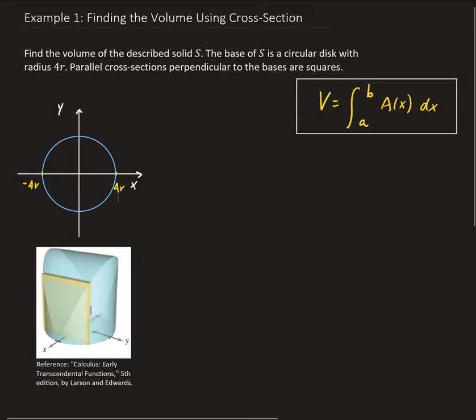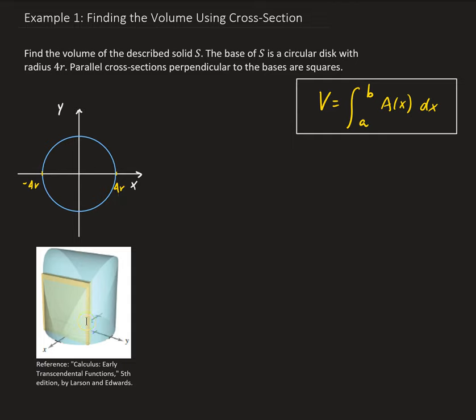What we need to do to find the volume of the structure is find the area of the cross section. In this case, the cross section is a square. Then we're going to integrate that within our bounds, and that will give us the volume. I'm going to draw in the cross section — it's acting as a representative piece.